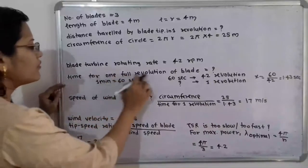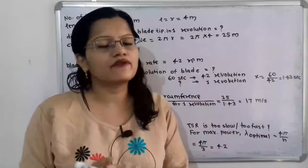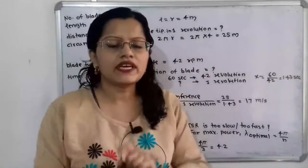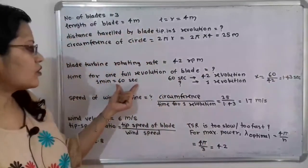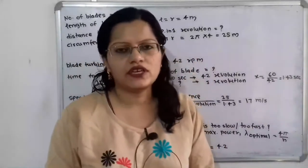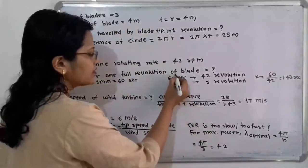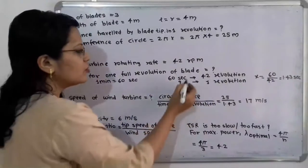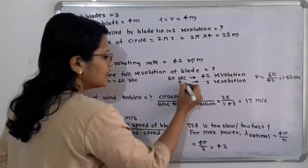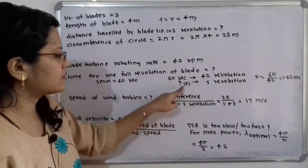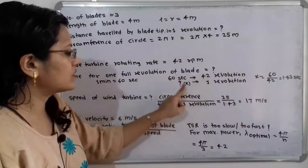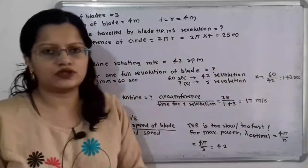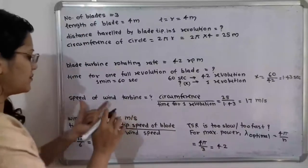Next, we find the time for one full revolution. The turbine rotates at 42 revolutions per minute, meaning in 60 seconds there are 42 revolutions. Using cross multiplication: x × 42 = 60 × 1, therefore x = 60 ÷ 42, which equals 1.43 seconds. So 1.43 seconds is the time required for one complete revolution.